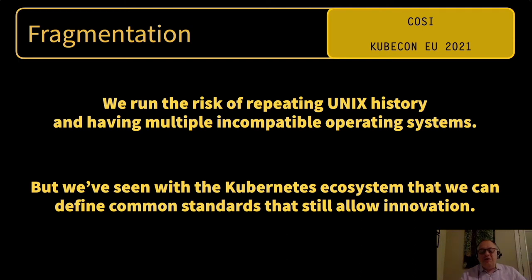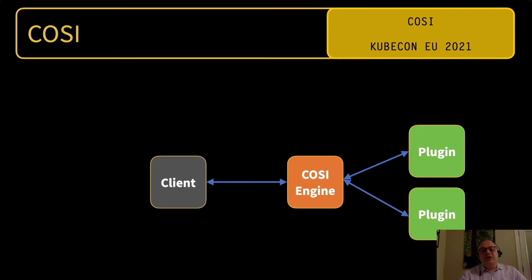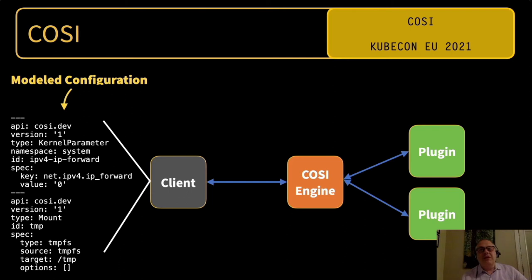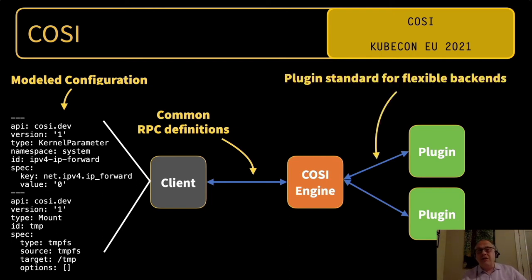Let's talk about Cozy. First, a disclaimer: we're recording this about a month before KubeCon and Cozy is in active development, so what you see at the time of this talk may be very different. Cozy includes a set of modeled configurations — everything that could be configured on a container OS has a model defined. Examples are shown in YAML, but Cozy doesn't care; it could be TOML or JSON, as long as it can be serialized into the Cozy protobuf message. Cozy also defines common RPC definitions — similar to Kubernetes: get, set, list, watch, and others. It defines plugin standards inspired by Kubernetes projects such as CNI and CSI. Finally, there's a reference implementation written in Rust, inspired by an internal rewrite of the Talos OS engine.